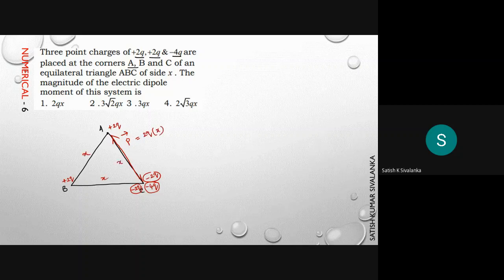The dipole moment of this dipole (-2q, +2q) is charge into separation between them. Charge on each is 2q, separation between them is x. Here another -2q and +2q form a dipole moment in this direction which is also equal to 2qx. The angle between these two dipole moments is 60 degrees.